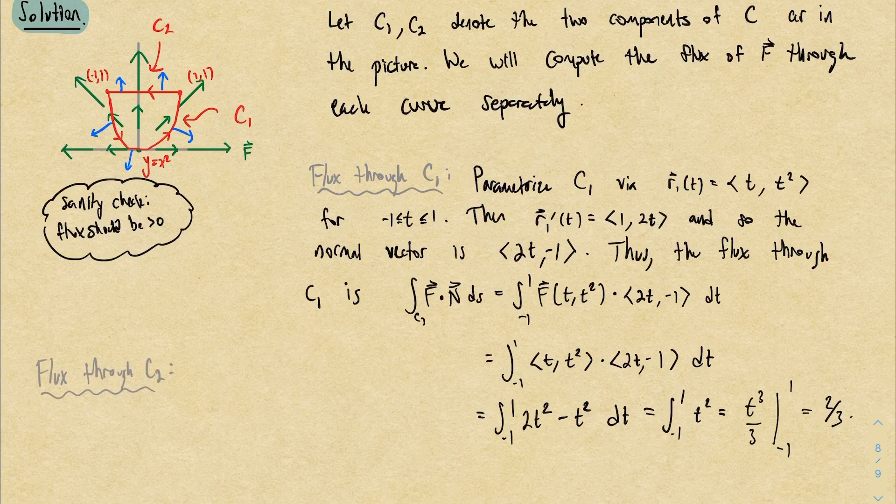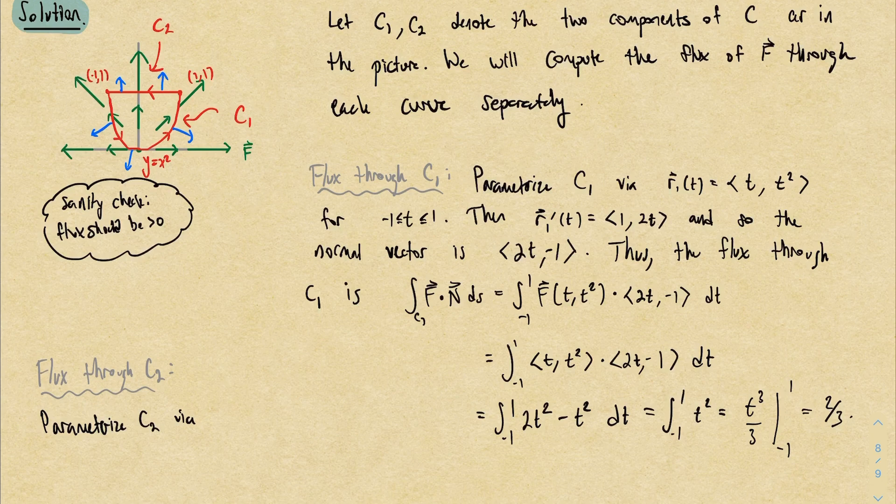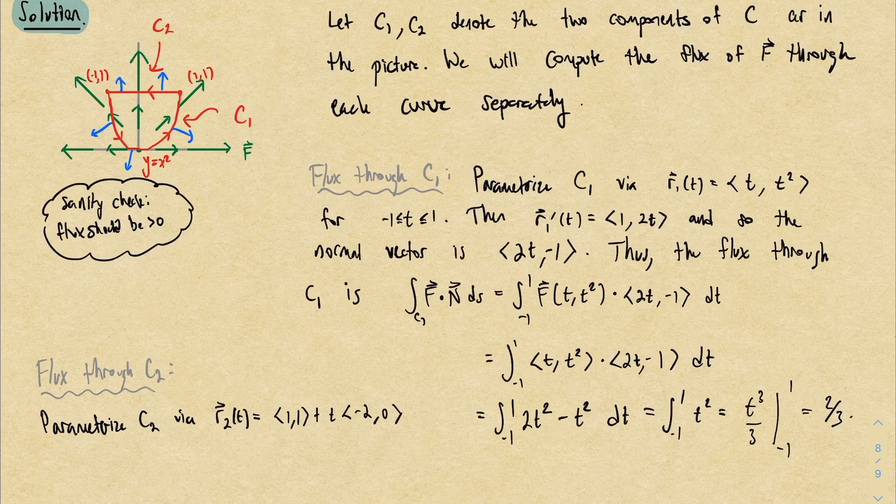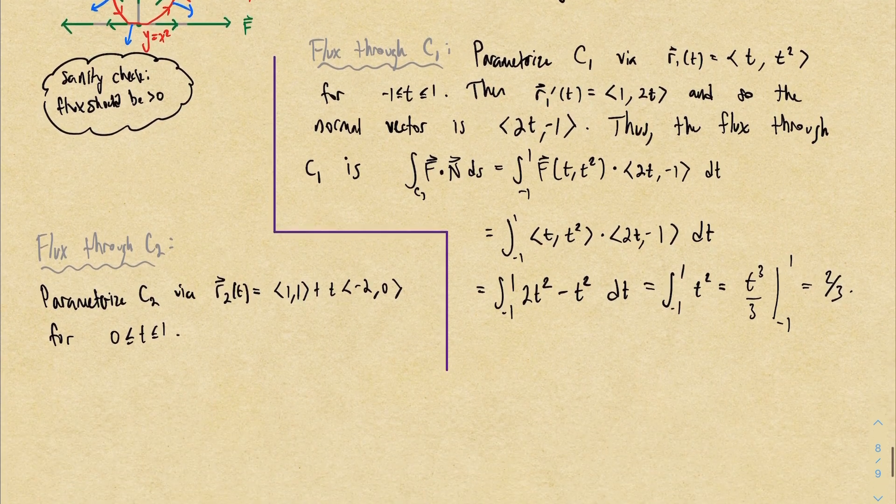Now we can do the same thing for C₂. C₂ is a straight line. So I'll parameterize it the same way I parameterize pretty much every single line segment. We start at the point (1,1). Then I'll add t times a direction vector, which I can get by subtracting the starting point from the end point. This would give us the vector -2, 0. And every time you parameterize a line segment like this, the t bounds will range from 0 to 1. So that parameterizes the curve in the correct direction.